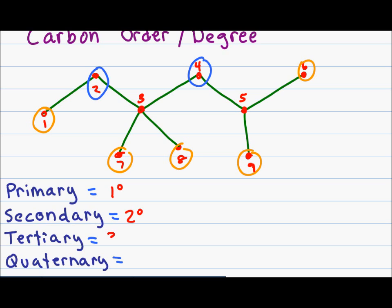A tertiary carbon is one that is attached to three other carbons. In this example, carbon 5 is attached to carbons 4, 6, and 9. And finally, a quaternary carbon is attached to four other carbons. In this example, that's carbon 3, which is attached to carbons 2, 4, 7, and 8.